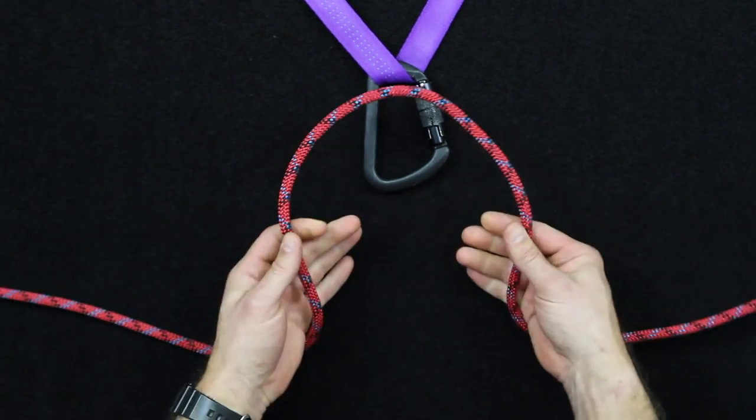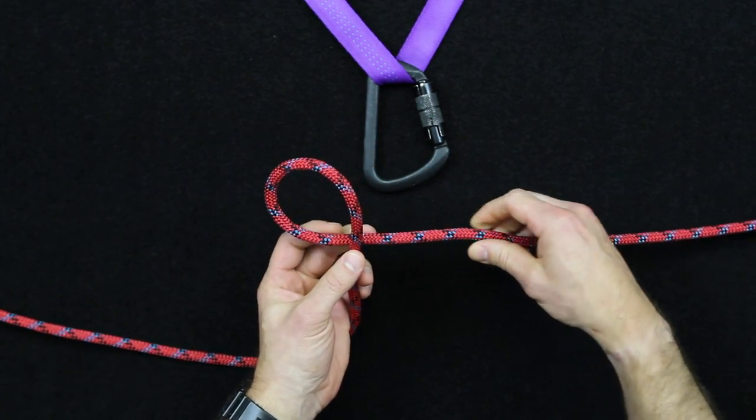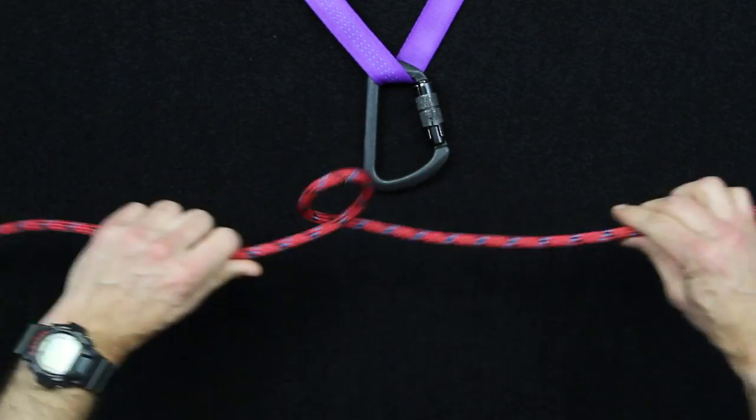So the first thing you'll do is you take your rope and you'll make a loop just like so, and then you'll form a second loop like this and combine them. I'll go through that one more time.